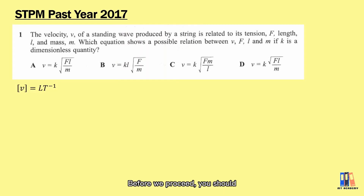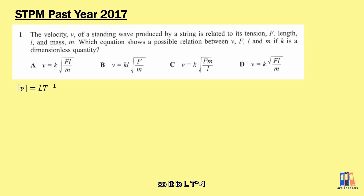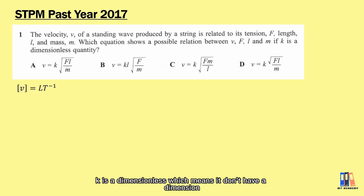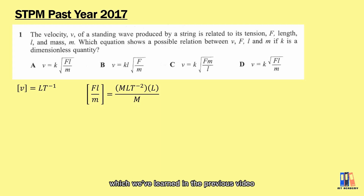Before we proceed, you should understand that the dimension of velocity is length per time, so it is L per T. We are going to check the dimension of the right-hand side equations for each of the answers. k is dimensionless, which means it does not have a dimension. The dimension of force is ML per T squared, which we learned in the previous video, and the length is L and the mass is M.